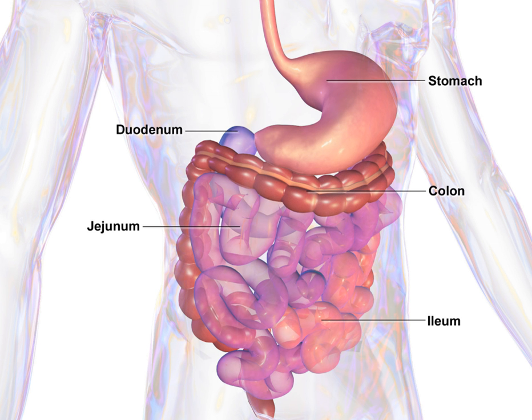The gastrointestinal tract is an organ system within humans and other animals which takes in food, digests it to extract and absorb energy and nutrients, and expels the remaining waste as feces. The mouth, esophagus, stomach and intestines are part of the gastrointestinal tract.